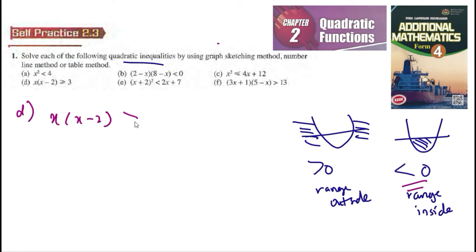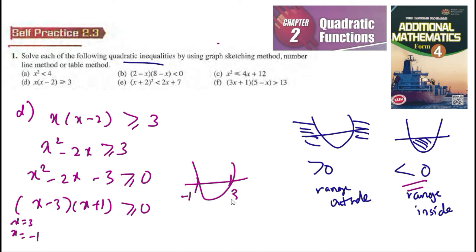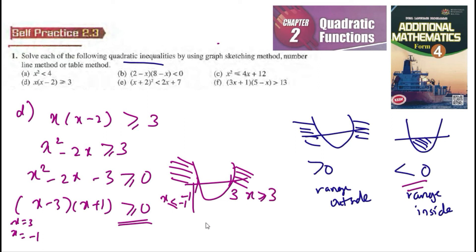For part d, x(x minus 2) is larger than 3, so x² minus 2x minus 3 is larger than 0, which factors to (x minus 3)(x plus 1) is larger than 0. So x equals 3 and x equals negative 1. Sketching the graph gives negative 1 and 3. Since it's larger than 0, the range is outside: x is smaller than negative 1, or x is larger than 3. Don't forget to include the equal sign if the inequality has one.